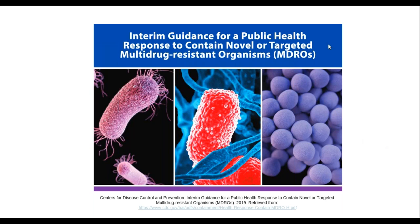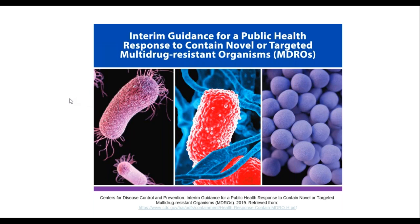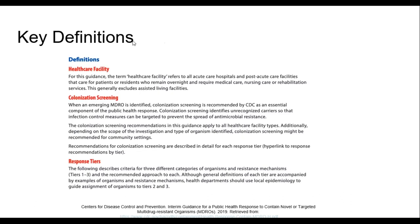Let's quickly discuss our interim guidance for a public health response to contain a novel or targeted multidrug-resistant organism. This is where we left off last week — we were discussing outbreaks and I really thought I was going to get through the other presentation more quickly, but I didn't. So what are our goals for an outbreak response? We want to identify the affected patients, ensure appropriate control measures are promptly implemented to contain further spread, determine if transmission and dissemination is occurring, and characterize the organism or mechanism to guide further response actions, patient management, and future response.